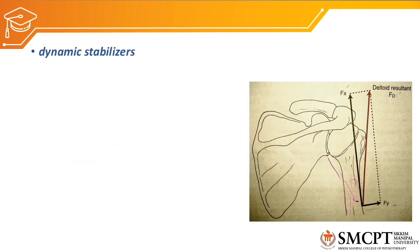Now coming to the important topic of arthrokinetics — that is the dynamic stabilizers of the glenohumeral joint. The first dynamic stabilizer is the deltoid muscle.